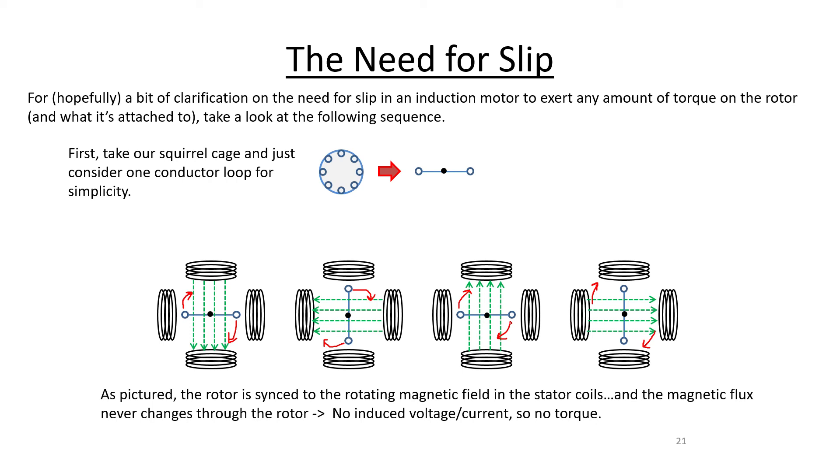If you're never changing the number of field lines through that loop, we know from Faraday's law that you're never going to induce a voltage difference, which means you're never going to create current flowing on the bars of this squirrel cage or through this loop. This thing will never feel a force.